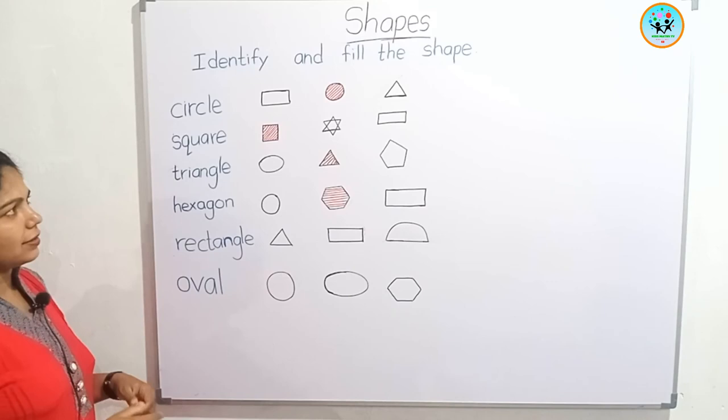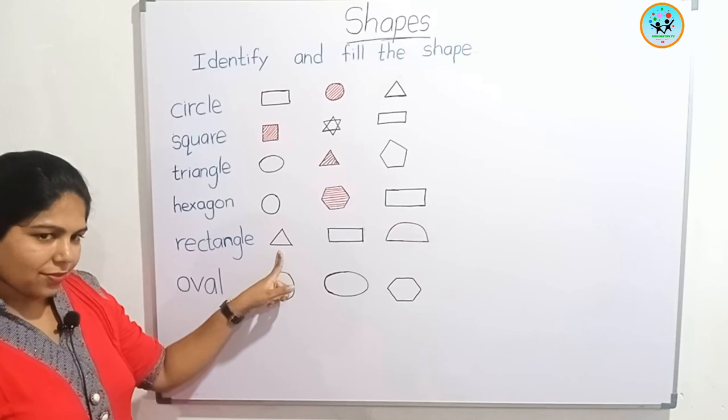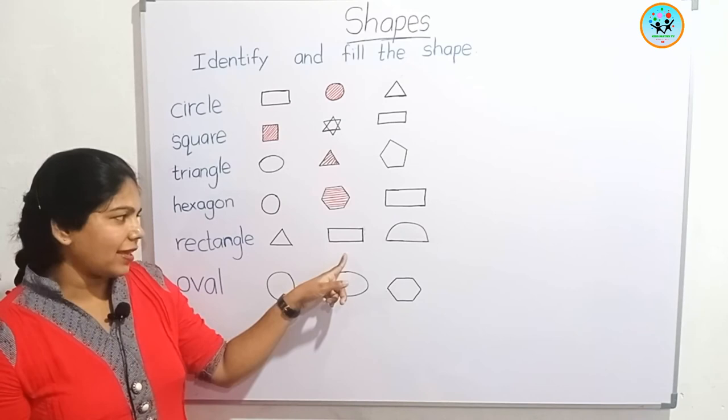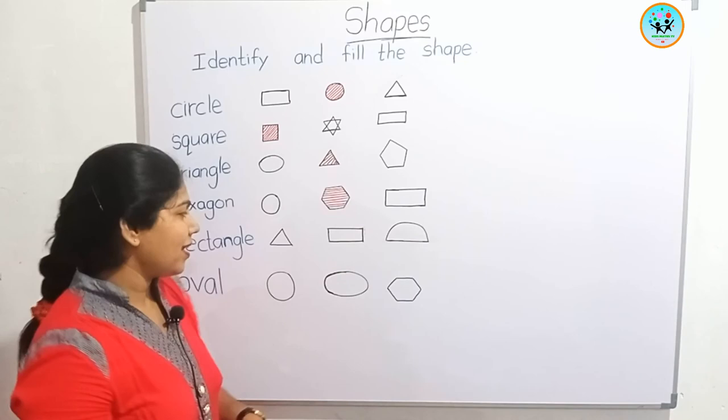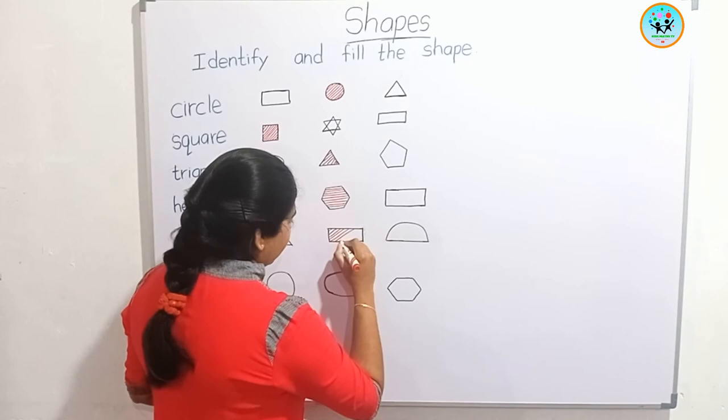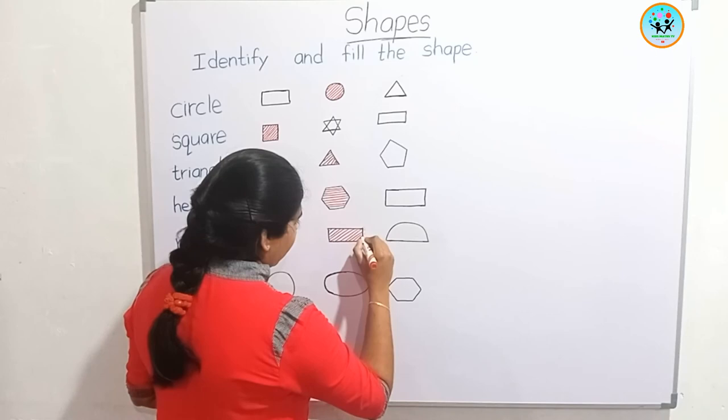Rectangle. You know this one — what is this? This is a triangle. The middle one is yes, it is a rectangle. This one is called semicircle. Let's fill the rectangle. How many sides are here? Four sides. Opposite sides are equal.